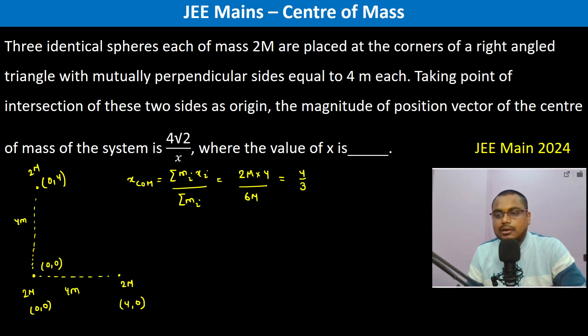4 by 3 x coordinate. Therefore, y also is same only because it's identical. So therefore, it's 4 by 3.